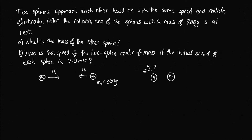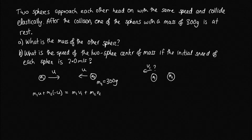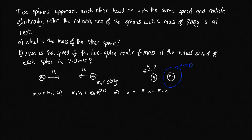Let's write down the equations describing this situation. Momentum is conserved, so: M1U + M2(−U) = M1V1 + M2V2. Since V2 = 0, that term drops out. Rearranging gives V1 = (M1U − M2U) / M1, and taking U as a common factor: V1 = (M1 − M2)U / M1. This gives us an expression for the velocity of sphere M1 after the collision.